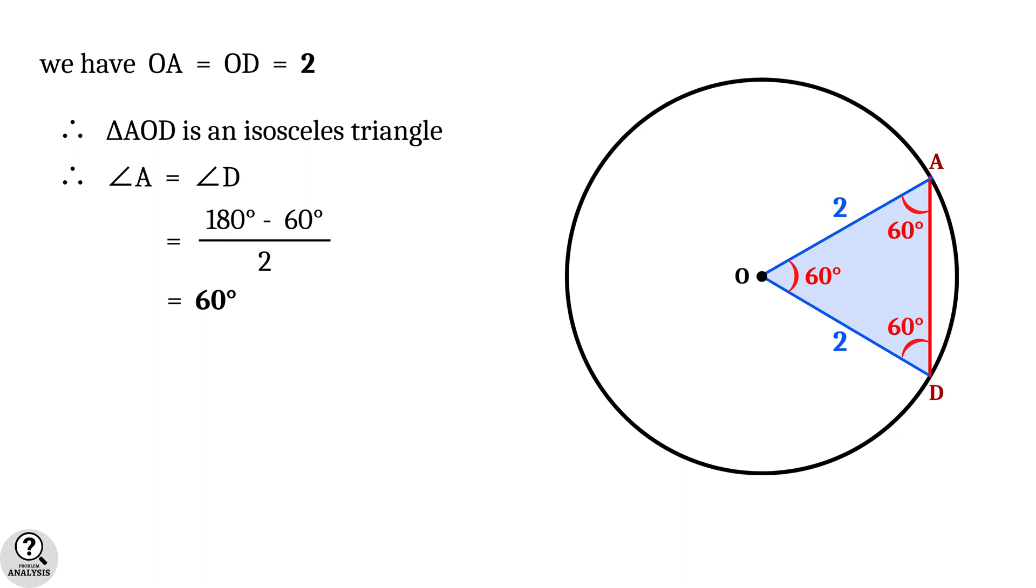So all the angles are 60 degrees. And hence, triangle AOD is an equilateral triangle, which means all the sides of triangle AOD are equal. And therefore, AD is equal to 2 units.